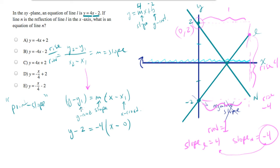And now we simply need to simplify this by solving for y to get the answer. Let's add 2 to both sides. And we end up with y equals negative 4x plus 2. That's your answer and that's answer choice A.